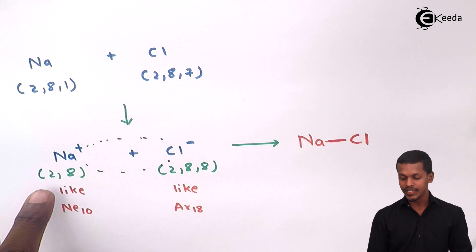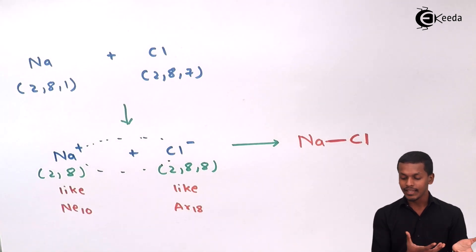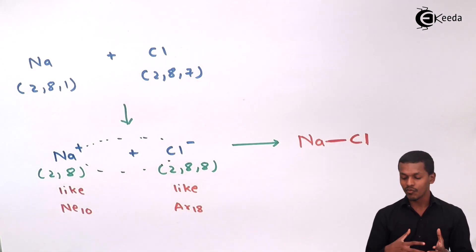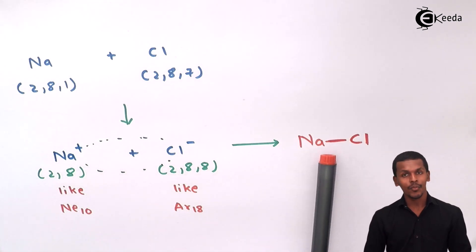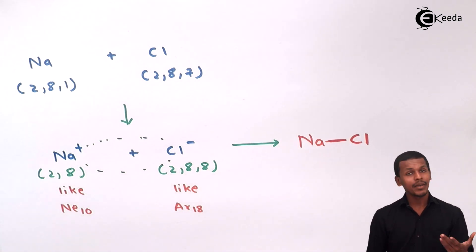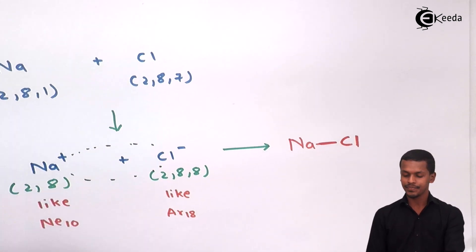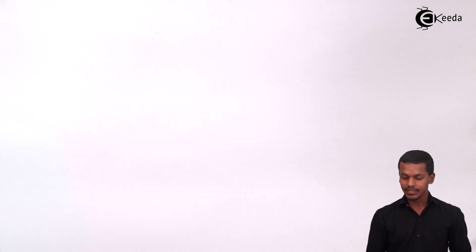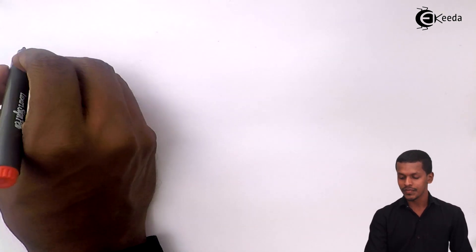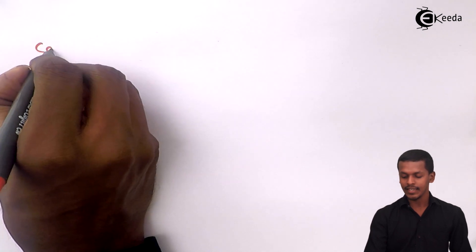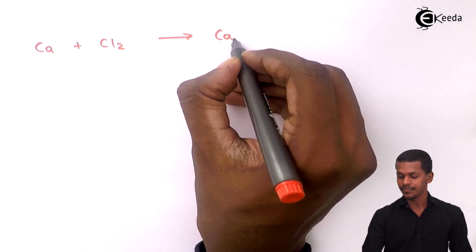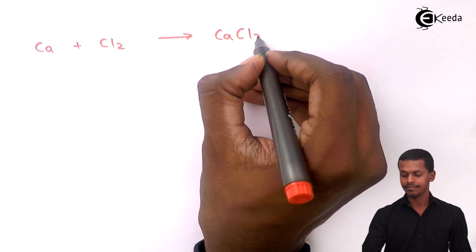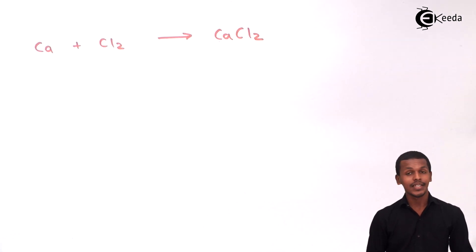Only one electron of the electropositive atom was transferred, and that is how the ionic bond is formed here. Now let me give another example — the bond formation of calcium forming CaCl₂.